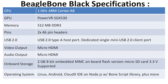The BeagleBone Black pin structure has 2×46 pin headers. It features USB 2.0 host port and a dedicated single mini USB 2.0 client port. Unlike the Raspberry Pi which has full-size HDMI, the BeagleBone uses micro HDMI for both video and audio output. Onboard storage is 2 GB 8-bit embedded MMC flash, with a micro SD card slot supporting 3.3V.